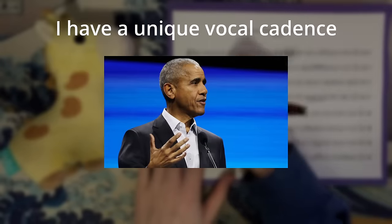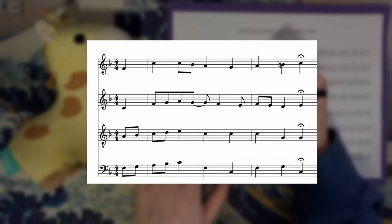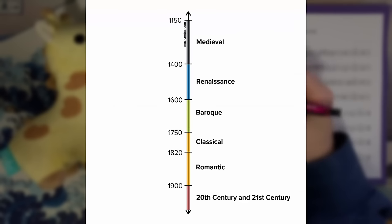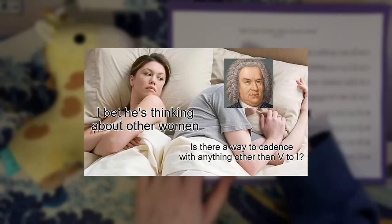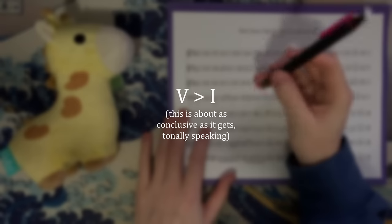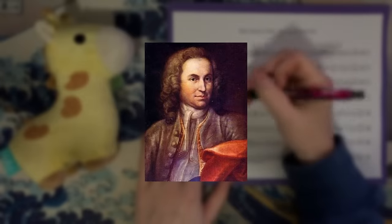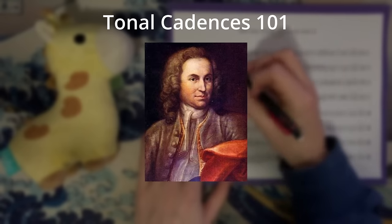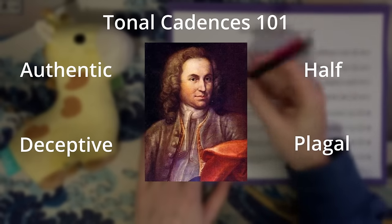Unlike the word cadence as used to describe speech inflections, in music a cadence refers to the ending of a phrase. In music of the common practice period, cadences are typically defined by their harmonic components and function like punctuation does in writing — some sound more conclusive, while others imply there's more music on the way. Cadences during Bach's time are commonly grouped into four categories: authentic, half, plagal, and deceptive.